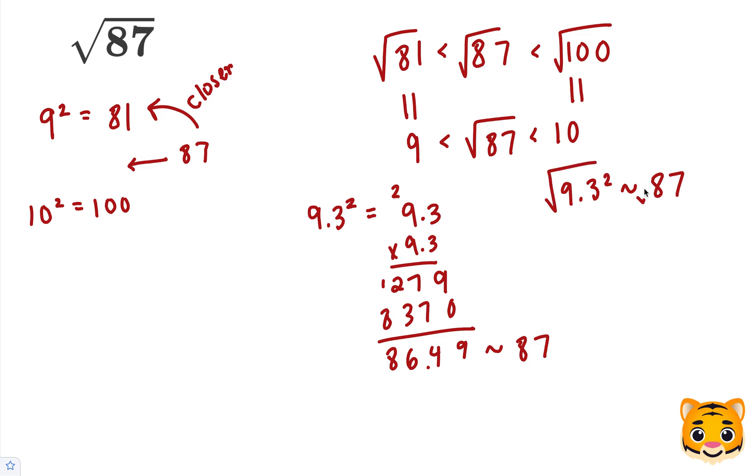Now we can take the square root of both sides here. And the square root will cancel the squared, and we get 9.3 is approximately the square root of 87, which is our approximated answer.